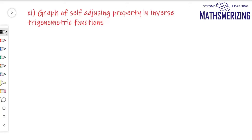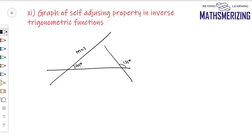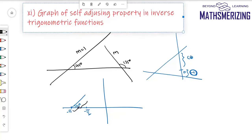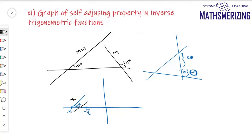The first thing is: if a line makes an angle of 45 degrees with the x-axis, its slope is 1. If a line makes an angle of 135 degrees with the x-axis, its slope is minus 1. The second point is: if a line intersects the y-axis above the origin, the y-intercept is positive. If it intersects below the origin, the y-intercept is negative.